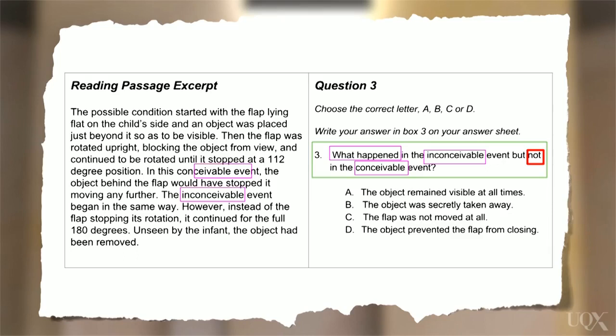So, to put it another way, could it be seen all the time? What about B? Was the object taken away? How could this be paraphrased? For example, a synonym for taken away is removed.